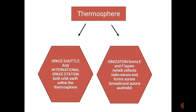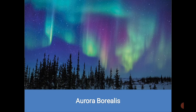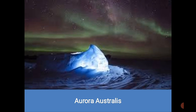The thermosphere can be about 500 degrees Celsius hotter when the sun is very active. Above 100 kilometers, space begins, so the thermospheric portion can essentially be considered space. Both the space shuttle and the International Space Station orbit Earth within the thermosphere. Ionization also takes place here, forming E and F layers which reflect radio waves and produce aurora borealis in the northern hemisphere and aurora australis in the southern hemisphere.